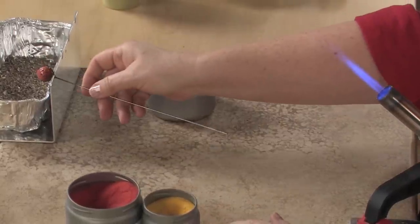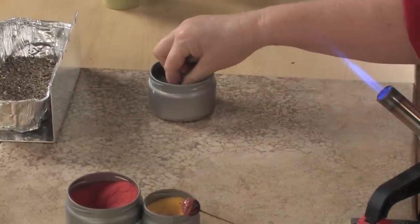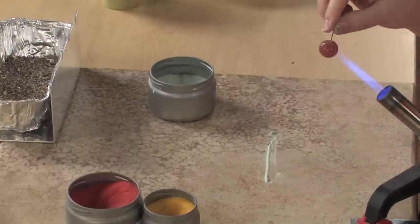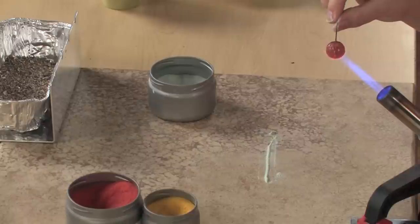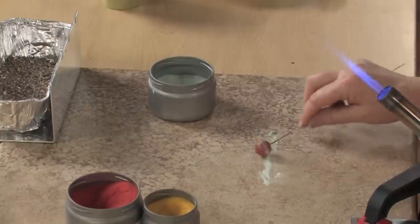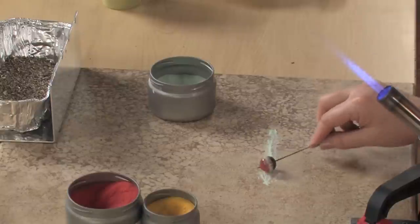Okay, now what I want to do is I just want to take a pinch of Robin's egg and just pull it across the tile. Heat the bead up and just roll the circumference through the enamel.